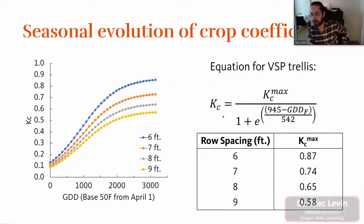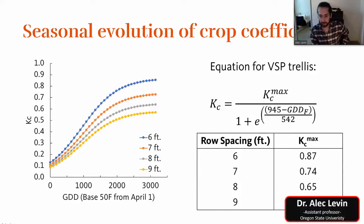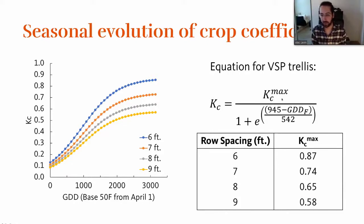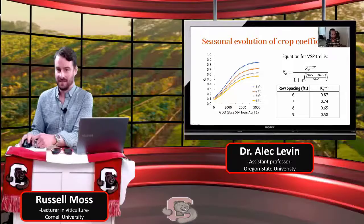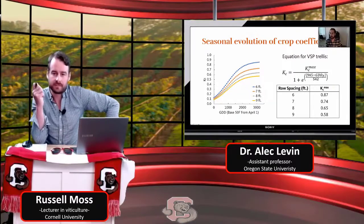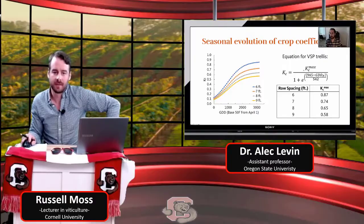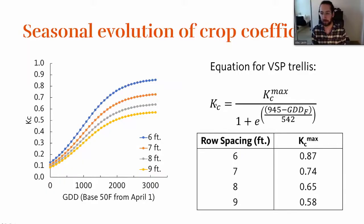These curves have equations. For VSP trellises — a very common trellis system used all over the world — here's the equation. The 'e' is just the exponent 2.71. The only inputs you need are the Kc max value, determined by your row spacing, and the total accumulation of degree days in Fahrenheit units. A lot of us use Fahrenheit in practice, so whatever your heat unit value is from bud break, you plug it in and get a Kc.